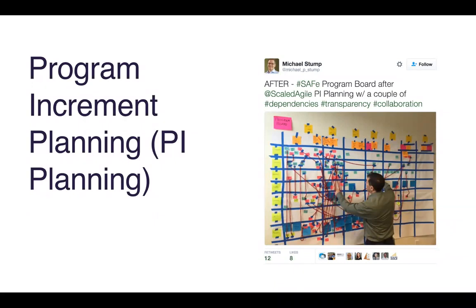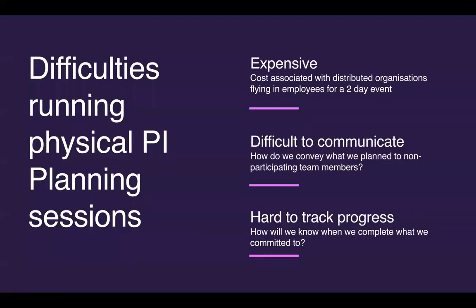Of course, there are challenges with running a physical PI planning session. Probably the most obvious is the expense. Ideally every member of the Agile Release Train — anywhere from 100 to 150 people — should be physically present in one location. You're flying that many people in, accommodating them for two or three days, and a PI planning session isn't just a one-time thing — it might happen four or five times a year. So it becomes quite a costly exercise.